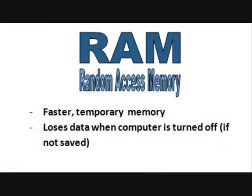Random access memory is a faster, temporary type of memory in which programs and data are stored whilst the computer is switched on. If the computer loses power, data stored in random access memory is lost.